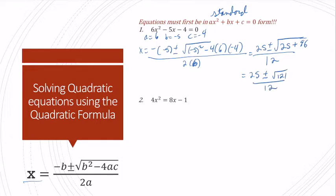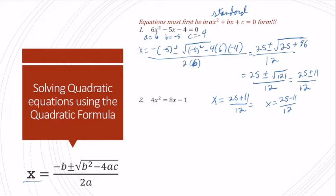This is really exciting because the square root of 121 is a really nice number — it's 11. So I have 25 plus or minus 11 over 12. Now I can solve for my two values of x: x equals 25 plus 11 over 12, or x equals 25 minus 11 over 12. 25 plus 11 is 36, divided by 12 is 3. 25 minus 11 is 14, divided by 12 — we can factor out a 2 — that becomes 7 over 6. So my solutions are x equals 7/6 and x equals 3, written smallest to largest.